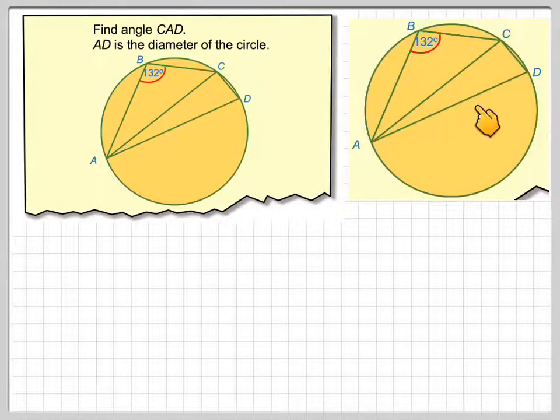So what we've got to realize here, we have four points. This is what's known as a cyclic quadrilateral.